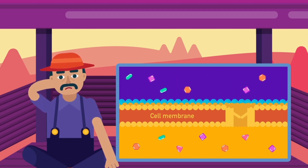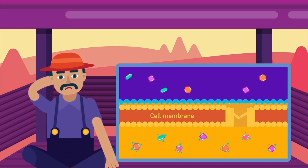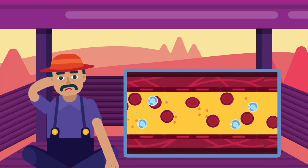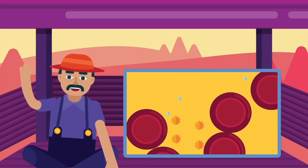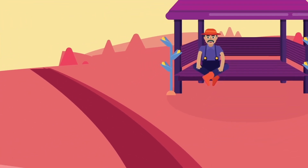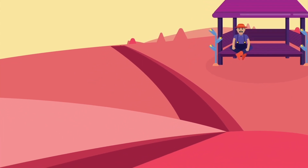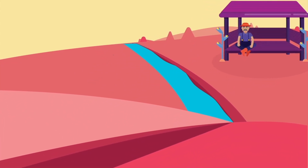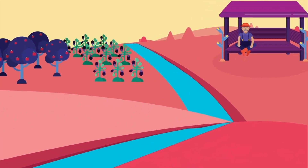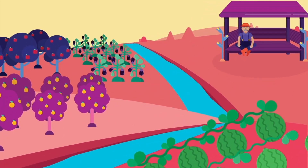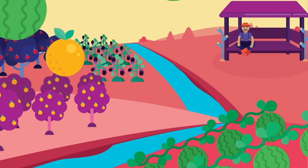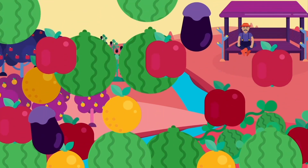So why do we still need a circulatory system? The answer is because it gives us a much faster process. The network of blood vessels in our body is the same as channels of water spread across farms, so that all of the crops get access to water and nutrients.